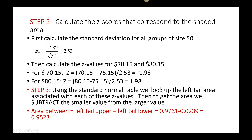Subtracting the smaller region from the larger one, we get an area of 0.9523, meaning approximately 95% of all groups of size 50 will have a mean price between $70.15 and $80.15.